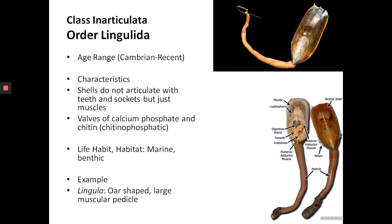In terms of life habit, like all brachiopods, Inarticulata are marine benthic organisms and they are solitary. The genus Lingula, still around today, typically has an oar-shaped elongated valve. The pedicle is very large at the back and does not have a separate pedicle opening — it goes through in the middle between the two valves.